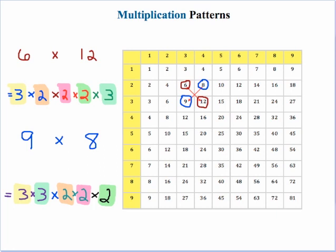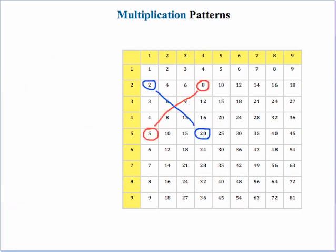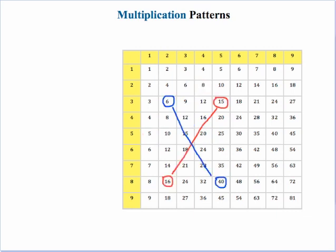What about other possibilities? 2 times 20 is 40, and 5 times 8 is also 40 — that works. And 6 times 40 is 240, and 16 times 15 also comes out to be 240. This can be a lot of fun, with students looking for all these different possibilities where they can get equal products, giving them a lot of practice with basic multiplication skills.